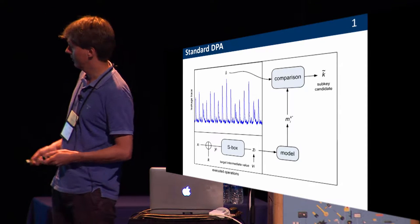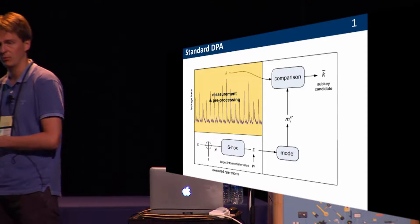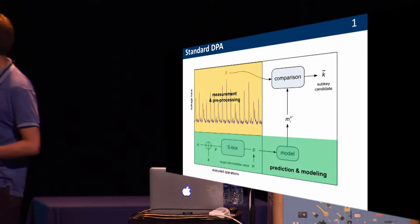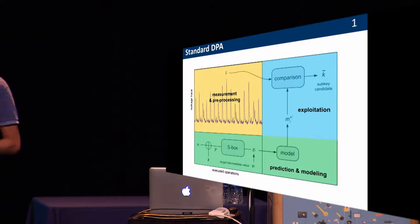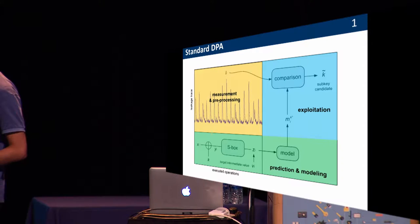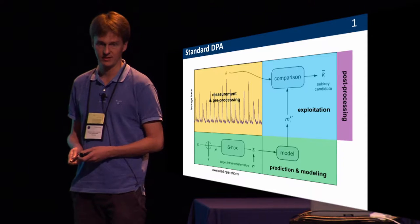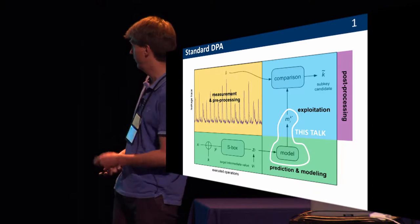If you look at these attacks, what's important is that there are many steps involved. Typically you will need some kind of measurements and pre-processing so that you acquire data that is as informative as possible. Then you have some kind of prediction and modeling, where you try to guess something about the internal values of your implementation and connect this with the physical leakages. Then there's usually an exploitation phase where you compare all your key-dependent predictions with the actual true leakages that you measured, giving you some information about the subkey. You can also do post-processing — enumeration or key rank estimation. In this talk, I will focus on this tiny part: how to model the physical function.